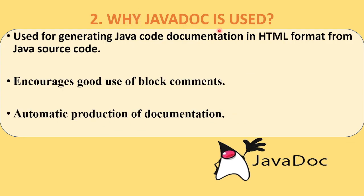Now we will see why Javadoc is used. It is used for generating the Java code documentation in HTML format. The HTML page will be created automatically by the Javadoc tool from the Java source code written in Eclipse or NetBeans. This HTML page is easier to understand. It also encourages good use of block comments — you can put different comments using Javadoc, and they will be generated automatically. There is also automatic production of documentation; you just have to use the generate Javadoc option inside Eclipse, and the HTML document will be produced automatically.